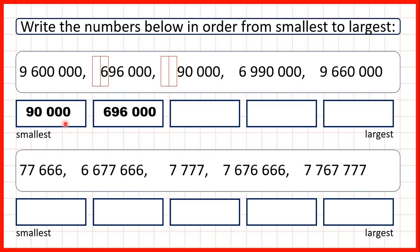Notice 90,000 only has 5 digits, and 696,000 only has 6 digits. All of our other numbers are 7-digit numbers. And when we are comparing whole numbers, numbers with fewer digits will always be smaller.